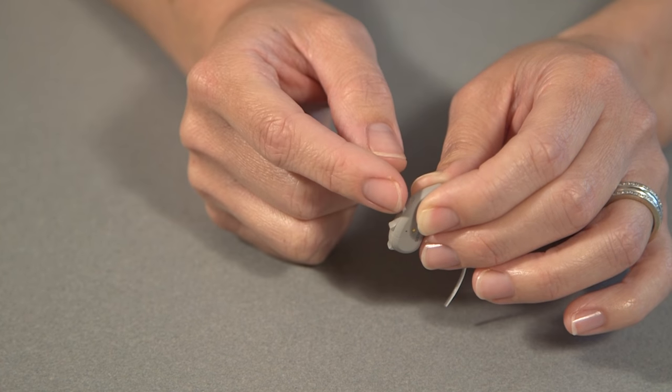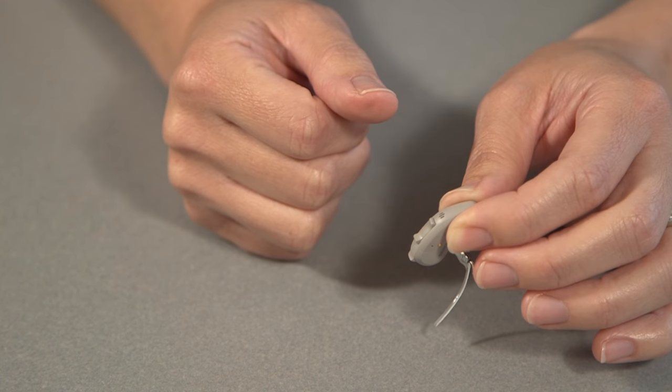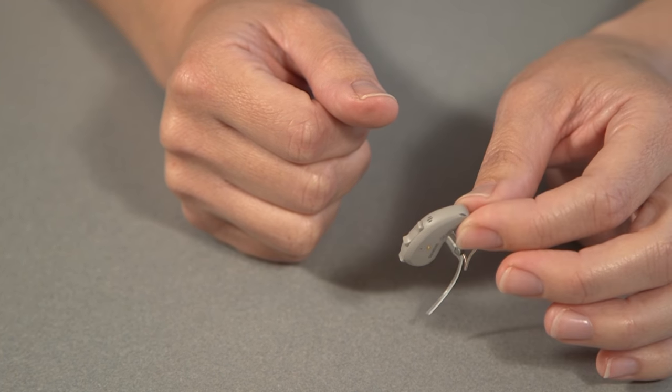So if someone makes a volume control change to one side, those changes will automatically apply to the other ear. You don't have to adjust both ears.